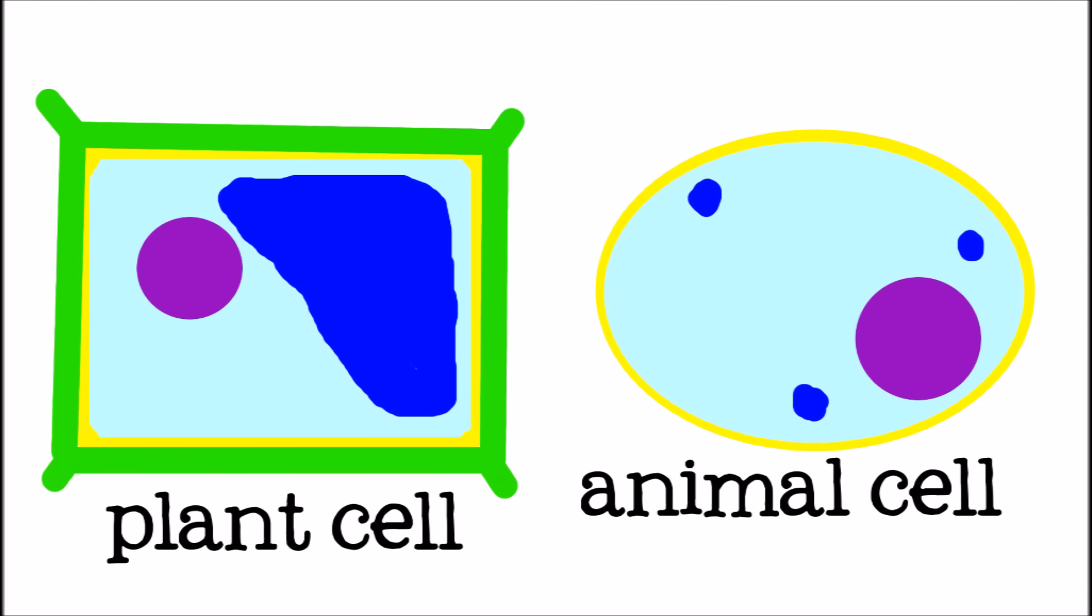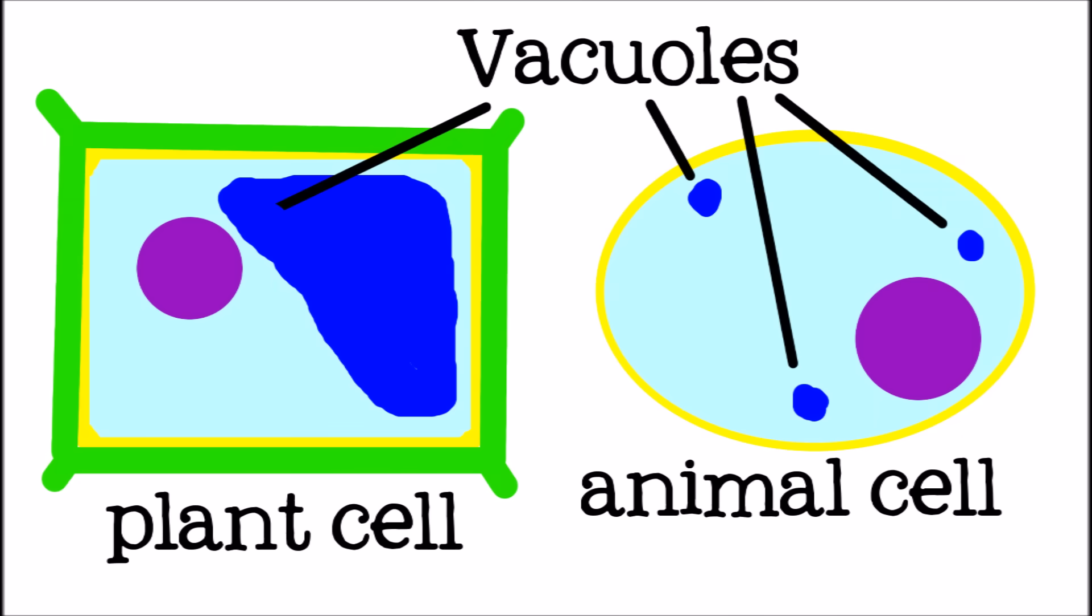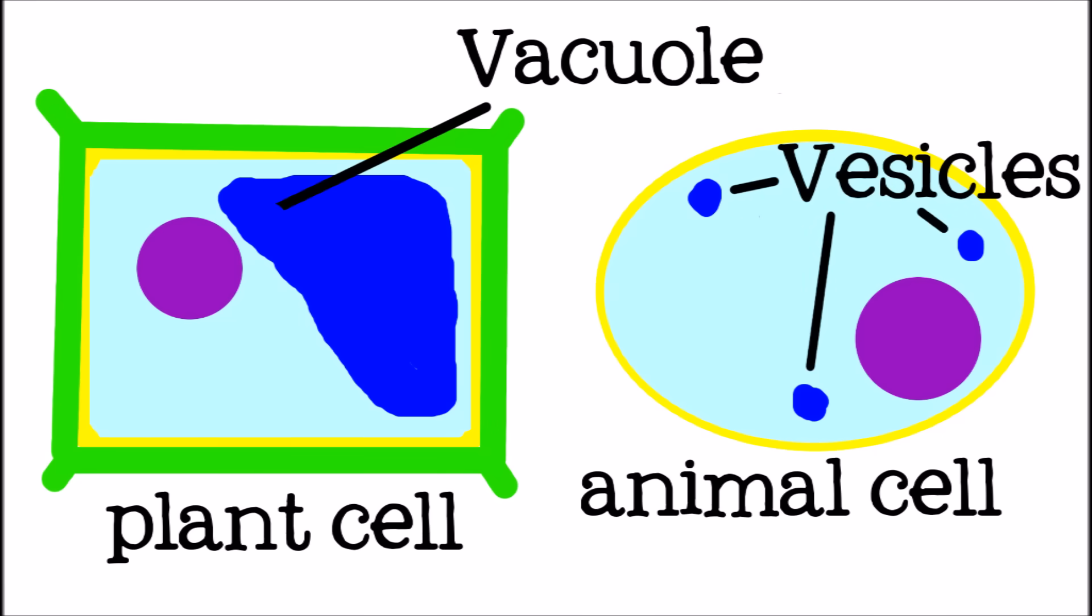Next let's talk about the vacuole. Vacuoles are basically storage tanks that the cell uses to hold water or other materials. A plant cell usually has one large vacuole, whereas an animal cell may have several smaller ones, called vesicles.